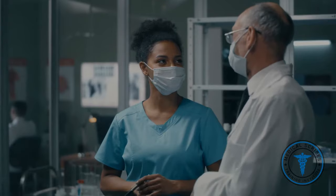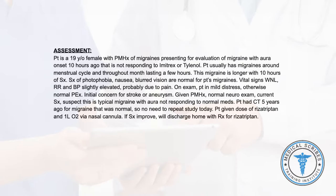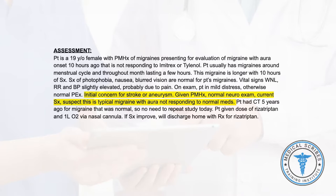Now review the assessment and plan. Make sure you have a problem statement summarizing the patient's overall health and chief complaint — the provider described this as migraine with aura. Also mention this migraine is not responding to medications and has been going on longer than usual since symptoms began 10 hours ago. Include that all current symptoms are normal for her episodes. Include the other diagnoses the provider considered — stroke and aneurysm — and how these were ruled out using her past medical history, normal neuro exam, and current symptoms. The provider does not wish to repeat the CT since the patient had one done five years ago with normal results.